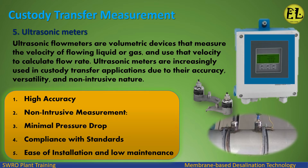Ultrasonic Flow Meters are volumetric devices that measure the velocity of flowing liquid or gas and use that velocity to calculate flow rate. Ultrasonic Meters are increasingly used in custody transfer applications due to their accuracy, versatility, and non-intrusive nature. Key advantages include high accuracy, non-intrusive measurement, minimal pressure drop, compliance with standards, and ease of installation and low maintenance.